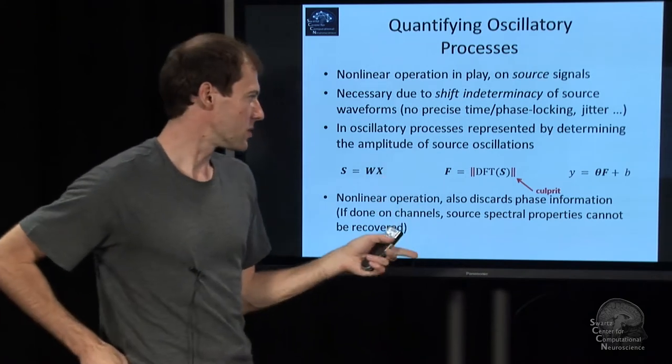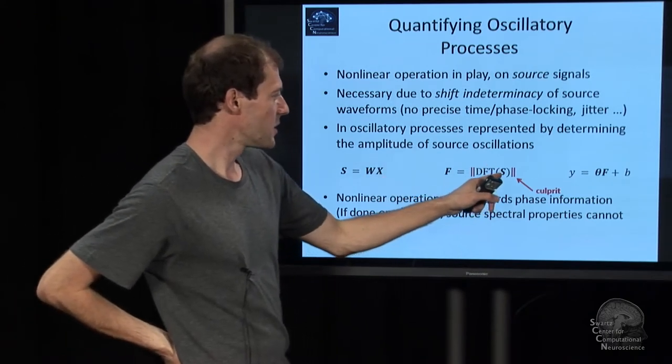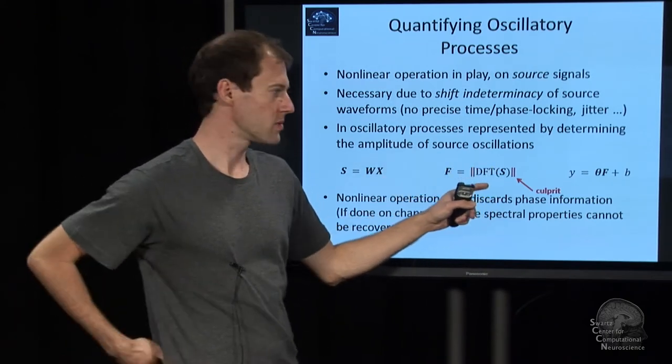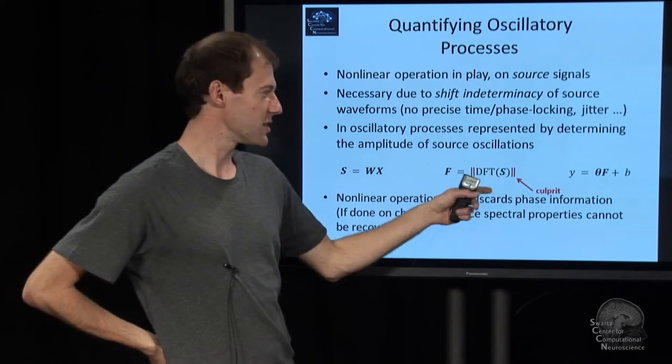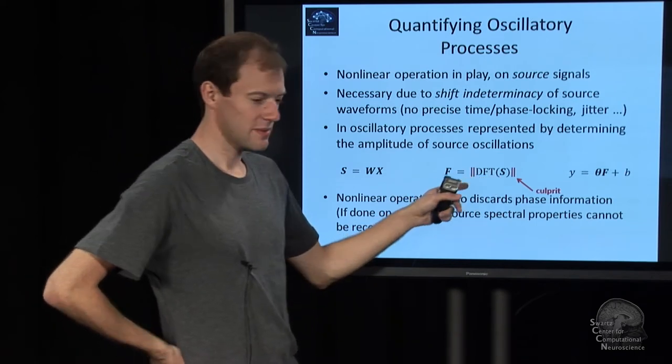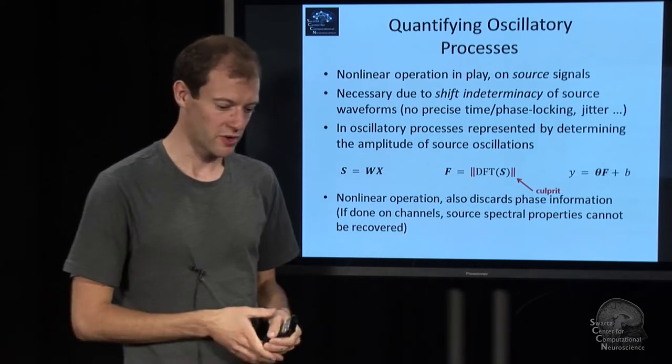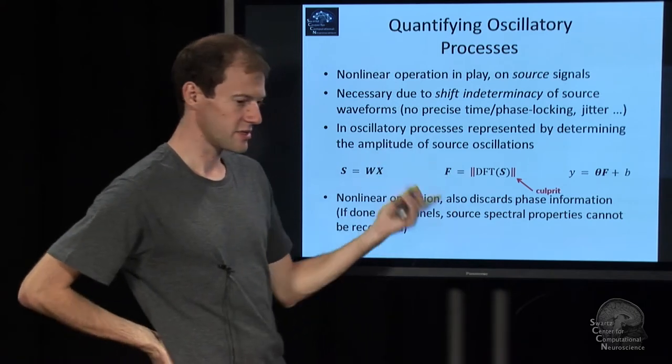And now we want to get to the spectrum. So we take S, we do the Fourier transform. That's a linear operation. But then we take the absolute value to get the magnitude of that oscillation, the power.